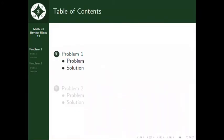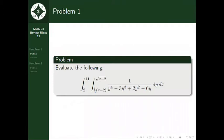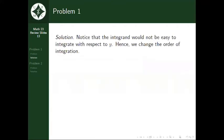For the first problem, we have to evaluate the double integral of 1 over y raised to 4 minus 3y cubed plus 2y squared minus 6y dy dx with these limits of integration. Take note that this integral uses critical strips. Also notice that the integral would not be easy to integrate with respect to y. Hence, we will change the order of integration.